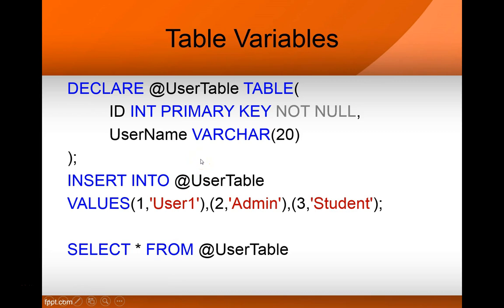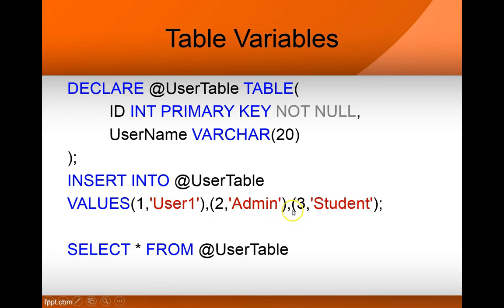For a table variable, you declare @userTable of type TABLE with columns like id and username. As long as you're in the same batch, you can treat that @userTable as a regular table — it's a virtual table in RAM. You can insert records into it with INSERT just like a normal table. Since id is a primary key but not identity, you explicitly specify values 1, 2, 3. Then you can SELECT from it and get the data back just like a regular table.